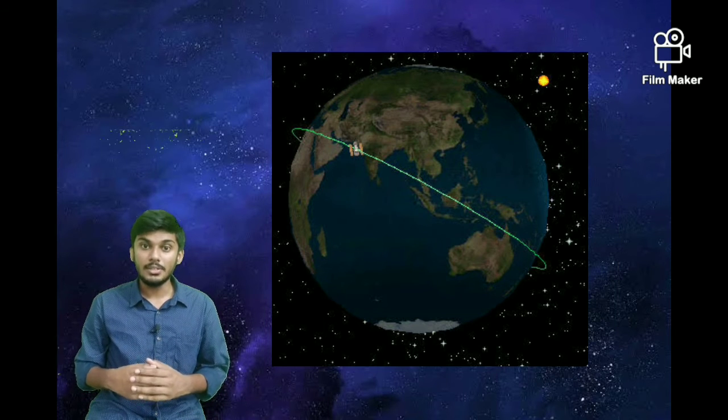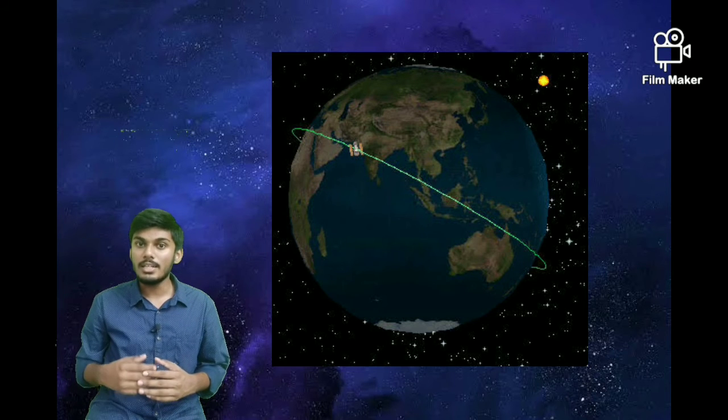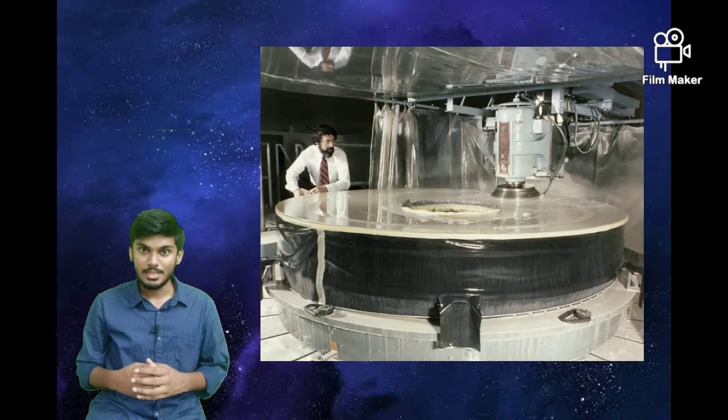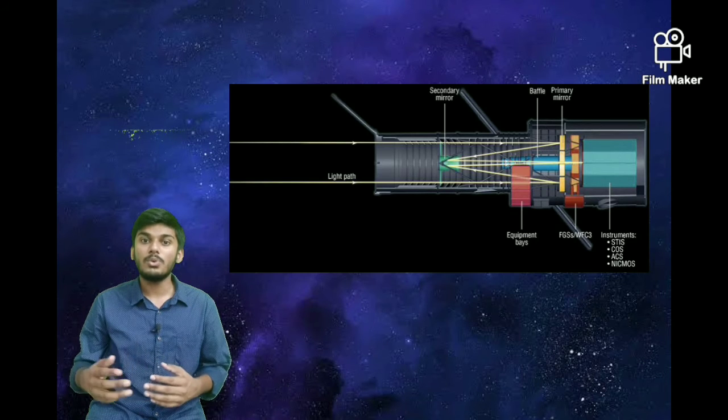The Hubble Space Telescope orbits the Earth from an altitude of 340 miles and completes one revolution around the Earth in 90 minutes. The Hubble Space Telescope has a mirror of about 2.4 meters.